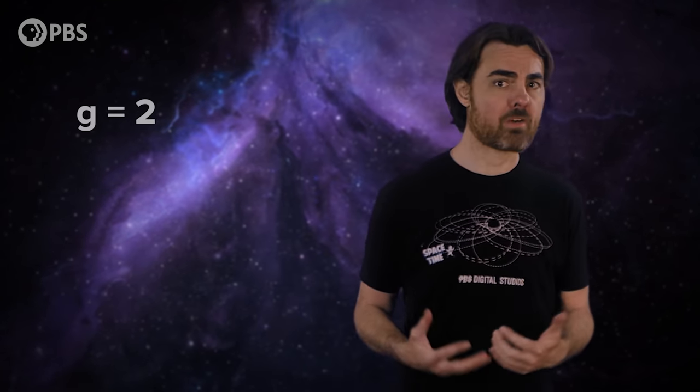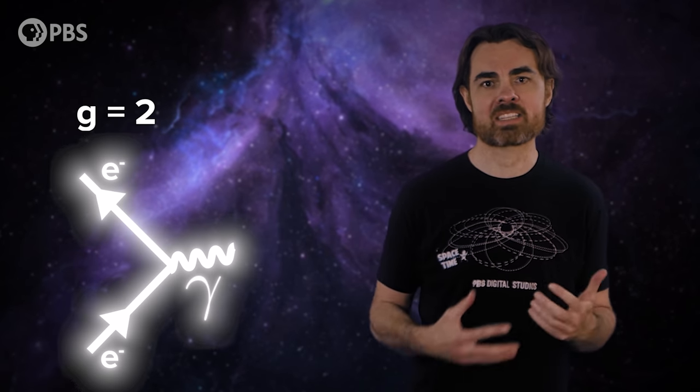We can represent an electron interacting with a magnetic field with the simplest possible Feynman diagram, really not even a full Feynman diagram. We have an electron being deflected by a single photon from that field. If you calculate the g-factor from just this simplest case, you get a value of exactly 2.